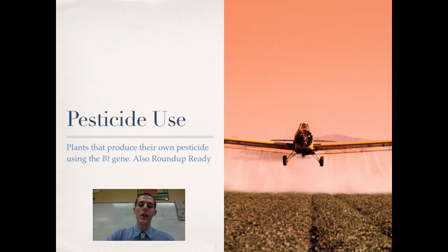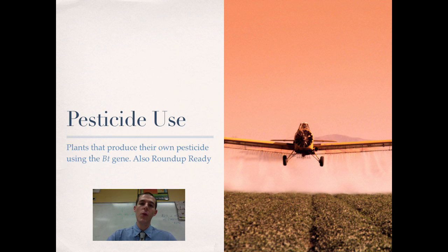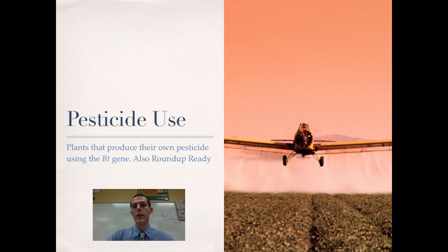There's also a product called a Roundup Ready Plant. The big manufacturer Monsanto produces the herbicide Roundup, which is a weed killer. They have also genetically engineered plants that are resistant to Roundup. So basically what a farmer can do is spray their whole crop with Roundup — it will kill off any of the weeds, but the crop plants that have been genetically modified will survive. So be aware of the BT gene and corn, and Roundup Ready plants.